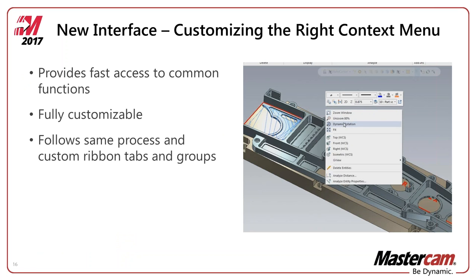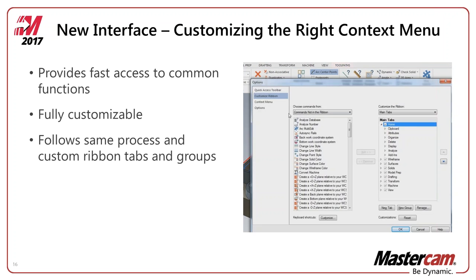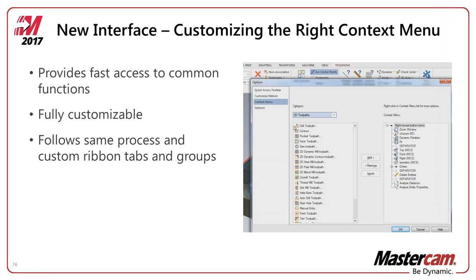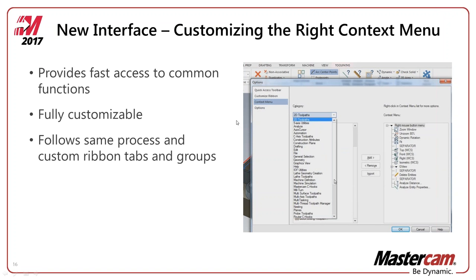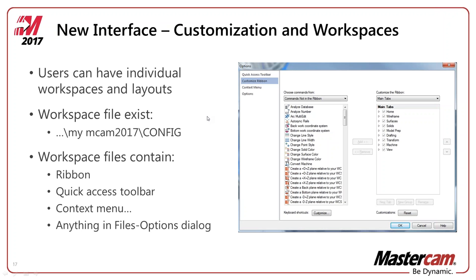If I was going a little too fast on the customization options, feel free to watch the recording after this or give any of our tech support guys a call and they'd be happy to do a GoToMeeting and show you more on customizing the interface. The file locations are in My Documents > My MCAM 2017 > Config.